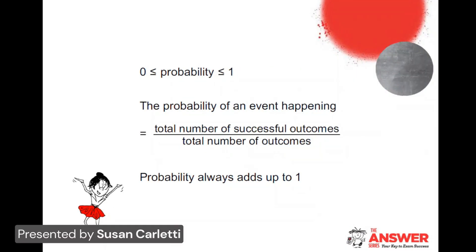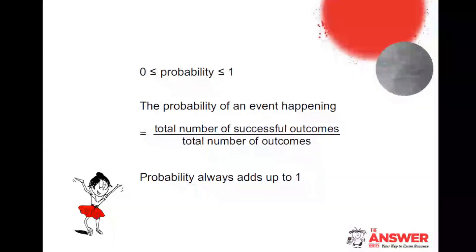Probability has to lie from zero to one. So if you ever get an answer of negative for probability or an answer bigger than one for probability, something has gone wrong. Go back and fix it.